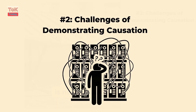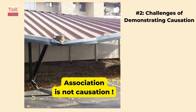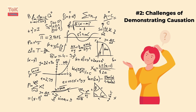Evaluation point number two: the challenges of demonstrating causation. In the natural sciences, establishing a causal relationship is notoriously difficult, especially in environments with multiple interacting variables. To demonstrate causation, scientists need to isolate variables and ensure that any observed effects are due to the variables of interest and not other confounding factors. This often involves controlled experiments and advanced statistical methods. Despite these efforts, achieving absolute certainty is rare, highlighting the tentative nature of scientific conclusions.